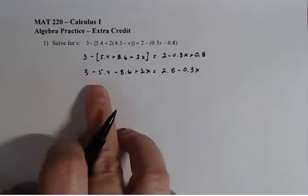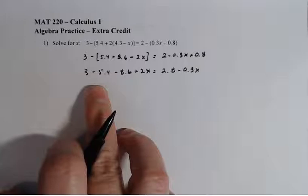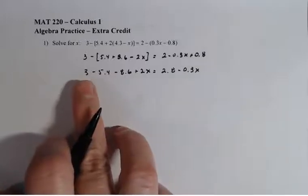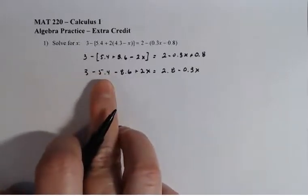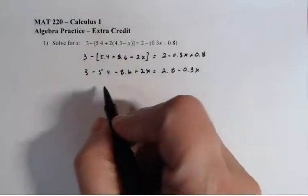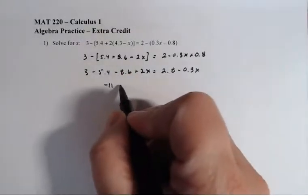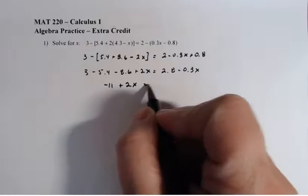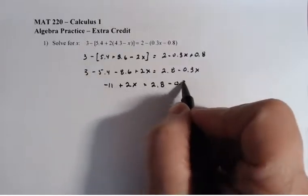Now in this line here, I'm going to collect the like terms that I have here. So 3 - 5.4 - 8.6, that actually comes out to -11 + 2x equals 2.8 - 0.3.